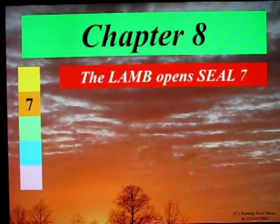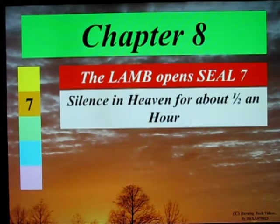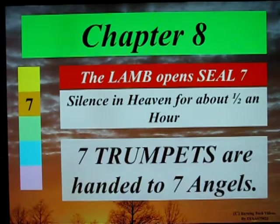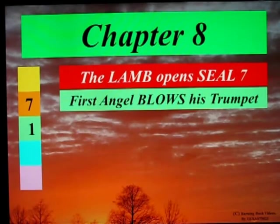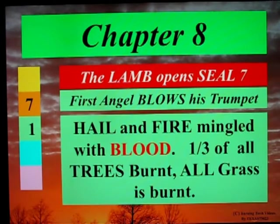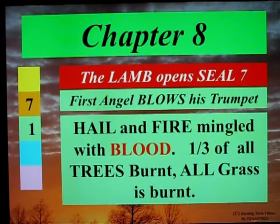Chapter 8: The Lamb opens seal number 7. Silence in heaven for about half an hour, and then seven trumpets are handed to seven angels. The first angel blows his trumpet — hail and fire mingled with blood — and a third of all the trees are burnt, and all the grass is burnt.